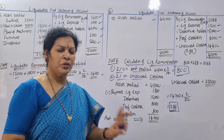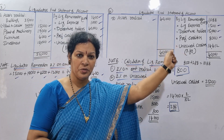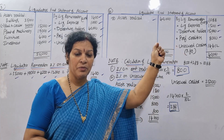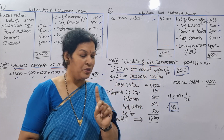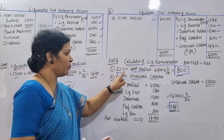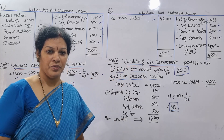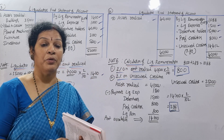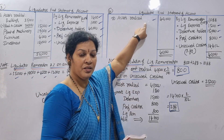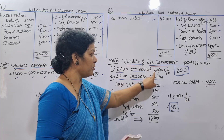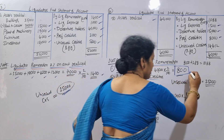The calculation of remuneration to the liquidator requires care. First point: 2% on the amount realized. The amount realized is $40,000. So 2% of $40,000 is $800.